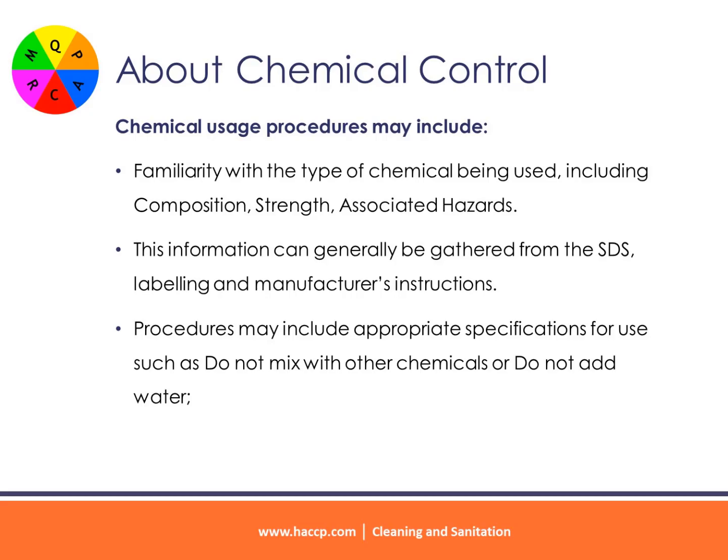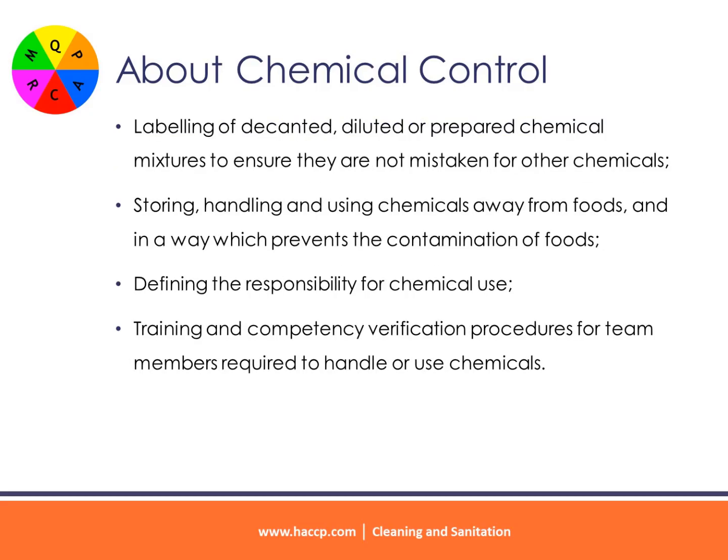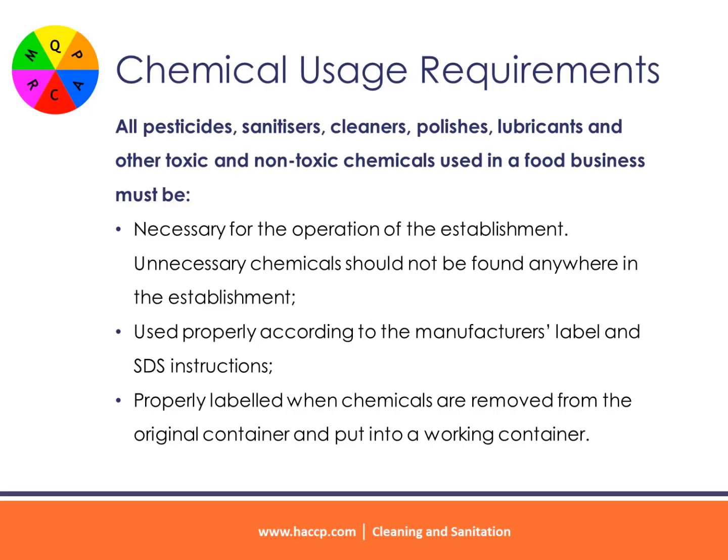Procedures may also include appropriate specifications for use, such as 'do not mix with other chemicals' or 'do not add water.' Labeling of decanted, diluted or prepared chemical mixtures is required to ensure they are not mistaken for other chemicals. Chemicals must be stored, handled and used away from foods in a way that prevents contamination. Responsibilities for chemical use must be defined, and training and competency verification procedures must be in place for team members required to handle or use chemicals.